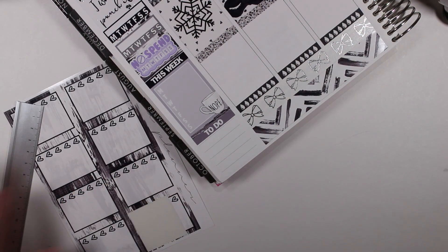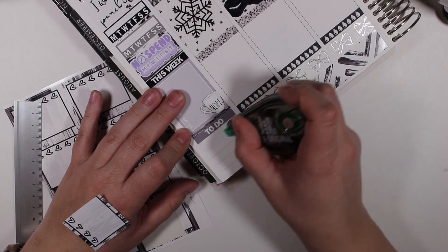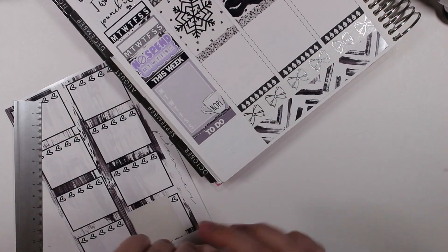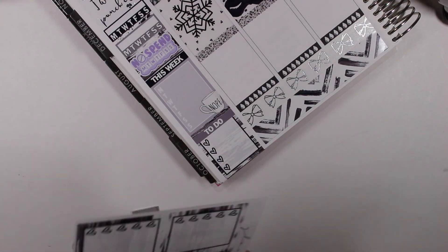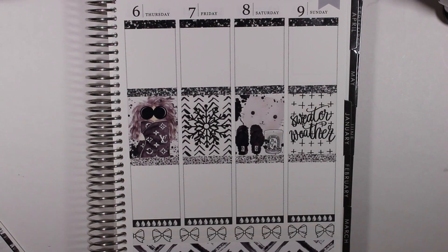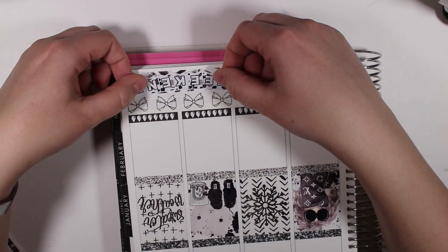Then I put down a to-do header and I cut up a checklist so that there were four checks at the bottom of it. And then I put the weekend banner at the end of the week because I had forgotten to do that before.